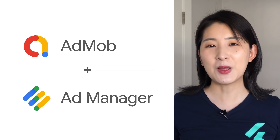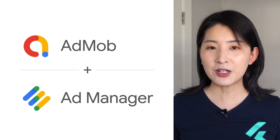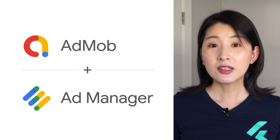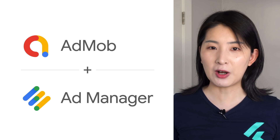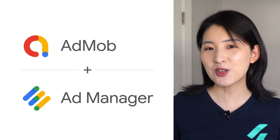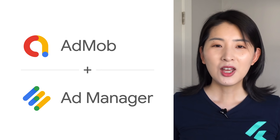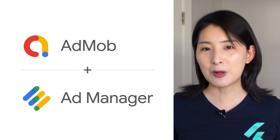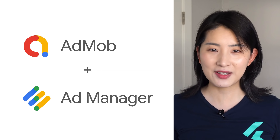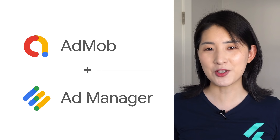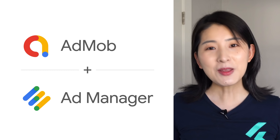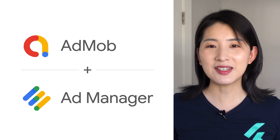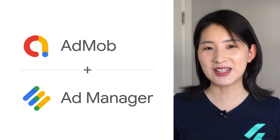For those of you who are not familiar, AdMob and Ad Manager are two different ad services. Generally speaking, small to medium-sized publishers prefer AdMob because it's an easy-to-use solution. Google Ad Manager is an ad management platform for large publishers who have significant direct sales and need more advanced features. That being said, no matter what size publisher you are, you can customize the Google Mobile Ads SDK for Flutter to meet your needs.